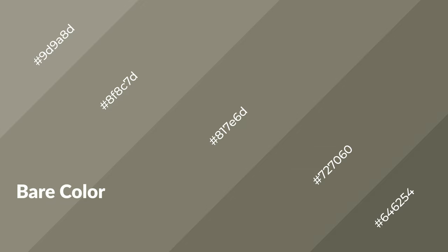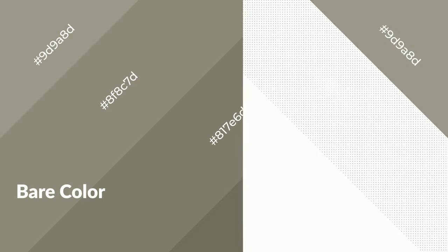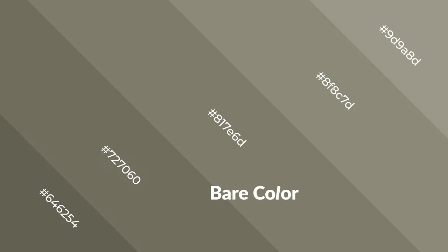Shades are used in patterns, 3D effects, and layers — they create depth and drama. Bare is a warm color and it emits cozier and active emotion. Warm colors are symbols of warmth, fire, heat, and sunshine. They also evoke joy, passion, love, and even anger. You can see them used in restaurants and gyms.